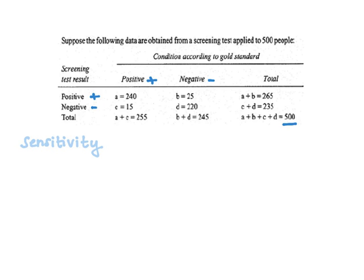Sensitivity is the proportion of people with the outcome who were correctly identified by the test. The formula is A divided by A plus C. This equals 240 divided by 255, multiplied by 100, to yield 94.1 percent.